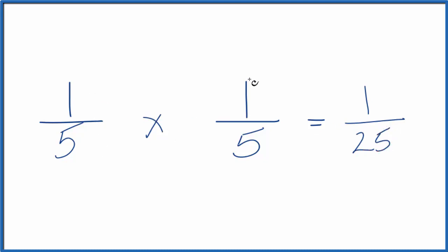So one-fifth of one-fifth equals one twenty-fifth. And we could look at the decimals for these fractions here just to check.